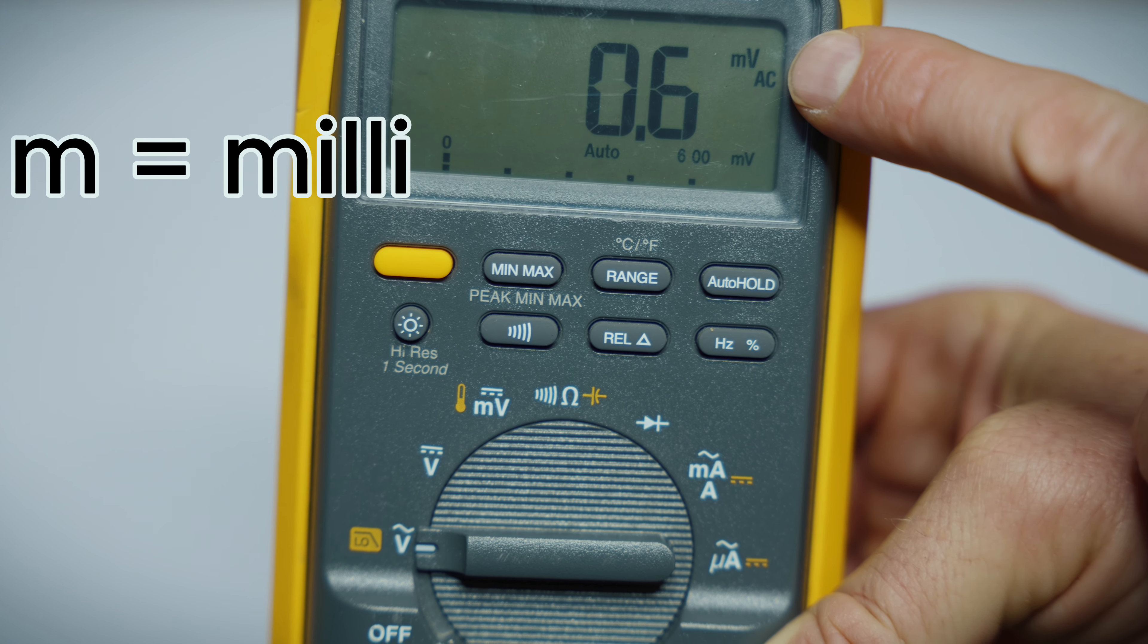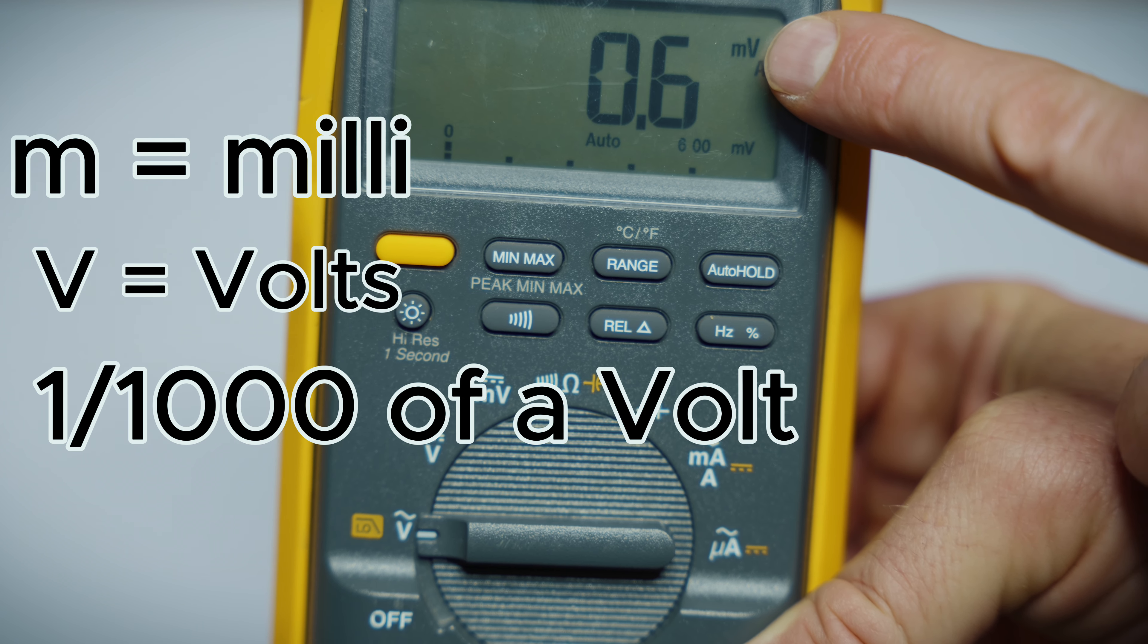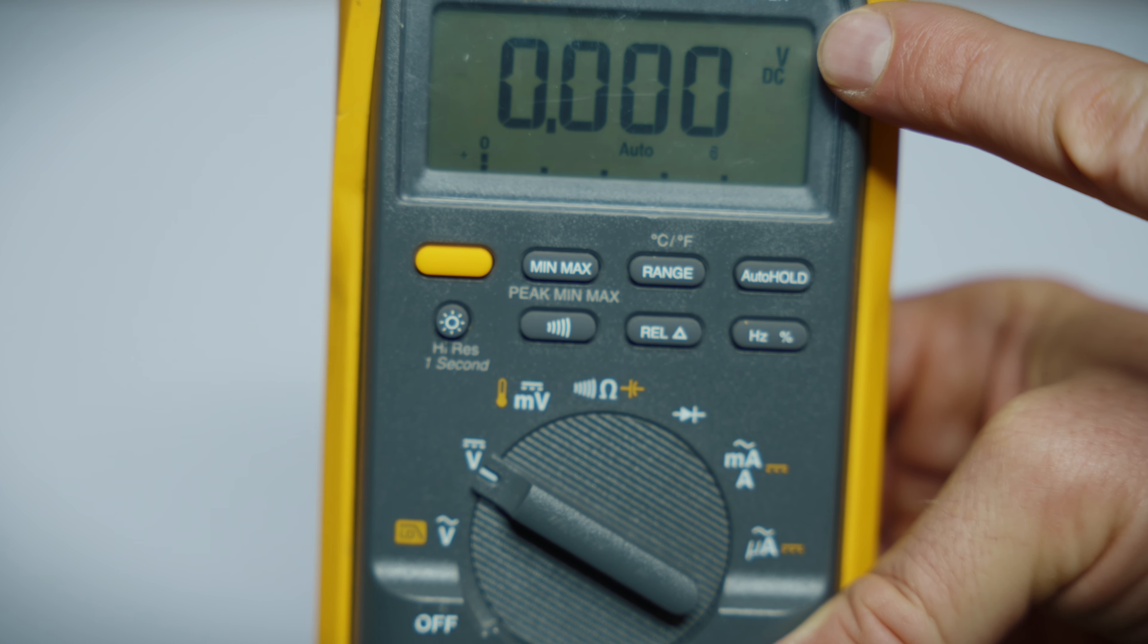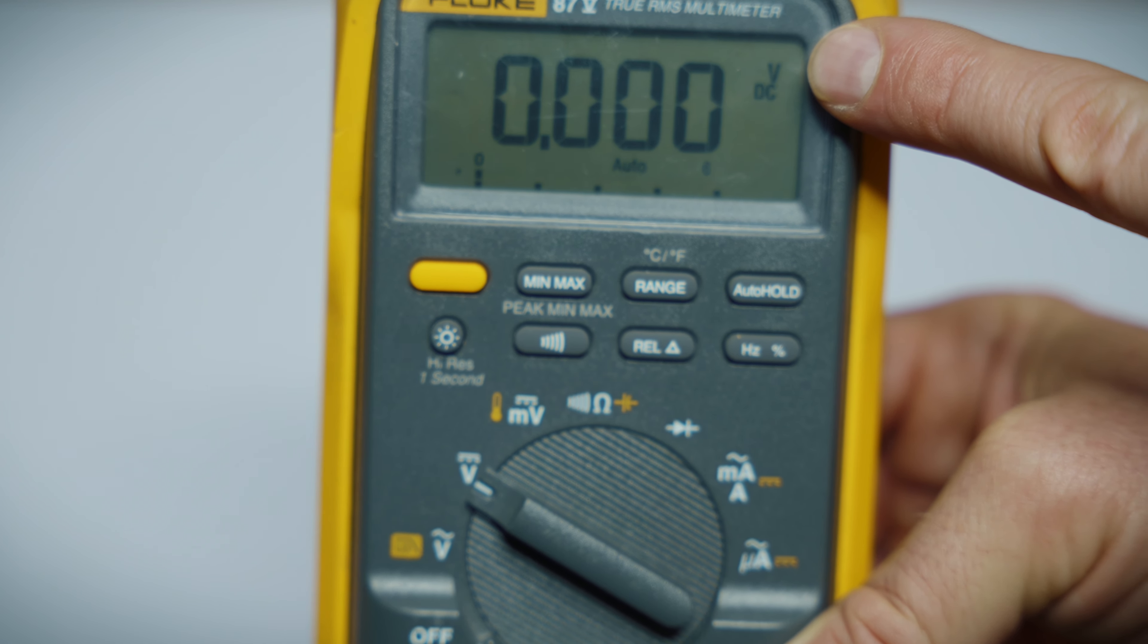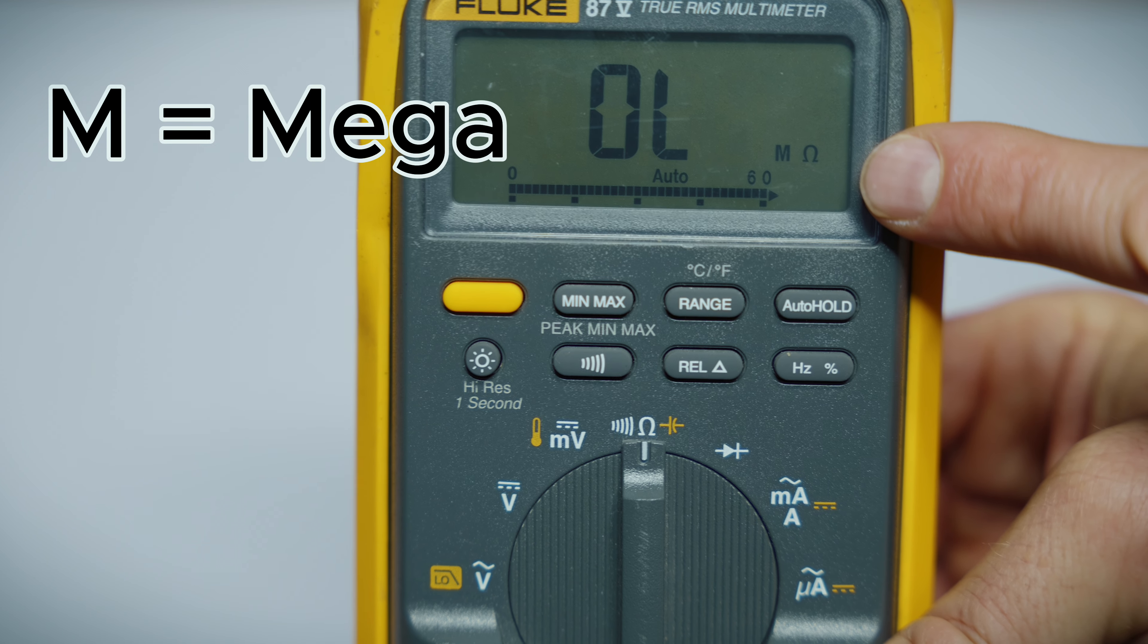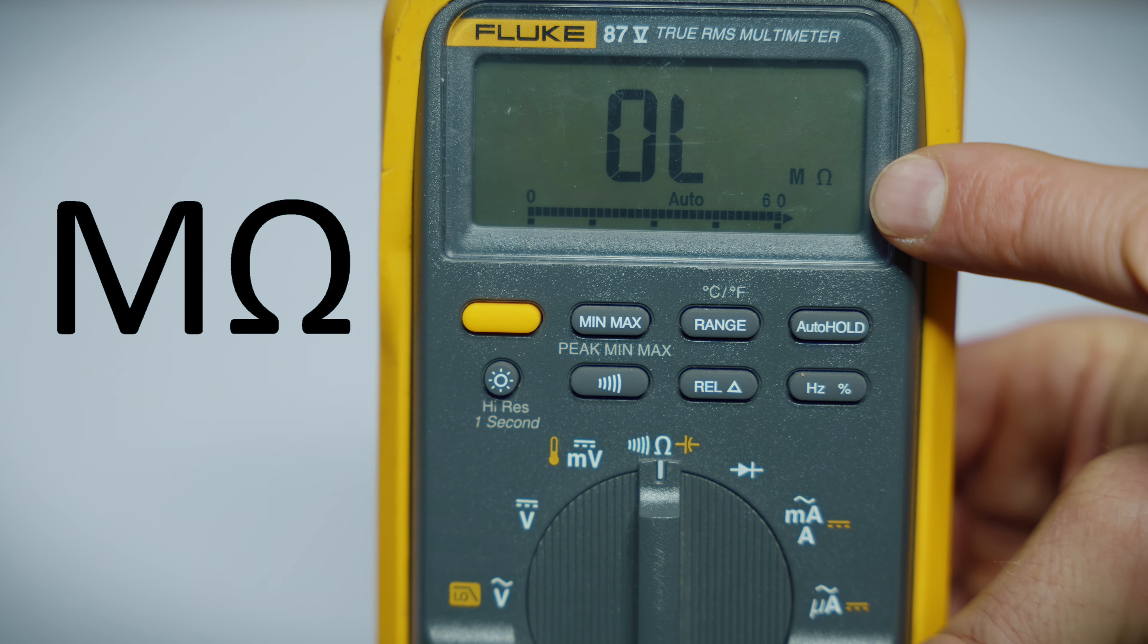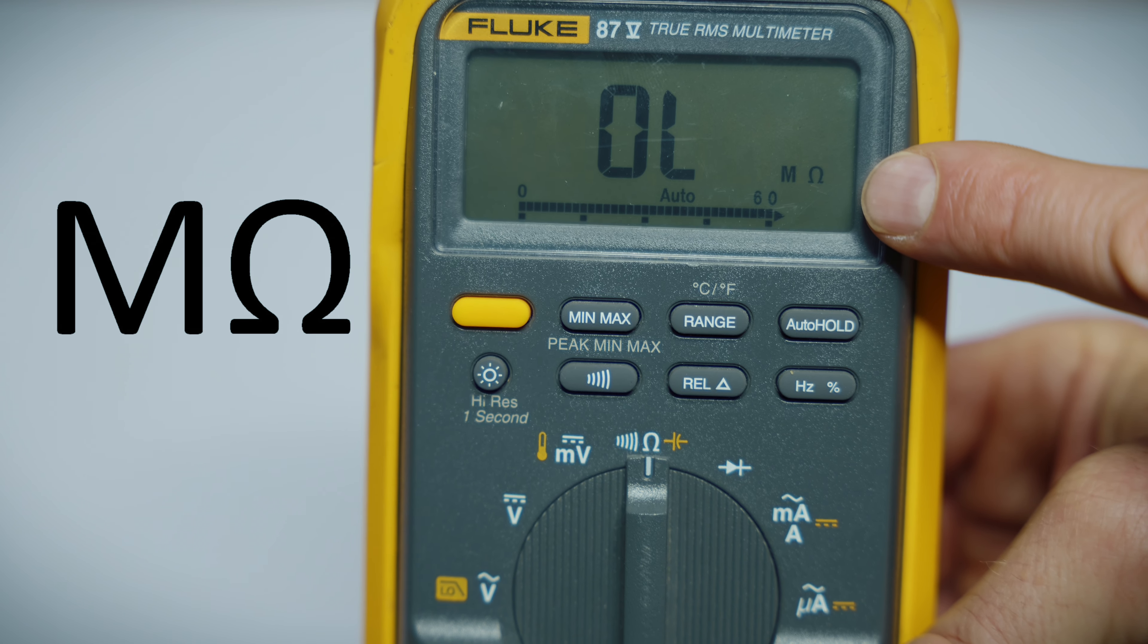So one more thing I wanted to go over was just all the different measurement letters that you're going to see. So here in volts AC, I have nothing hooked up. You're seeing a small m, that's milli, and the big V, that's volts. So that's a thousandth of a volt. And the big V in volts DC, of course, that's just whole volts.